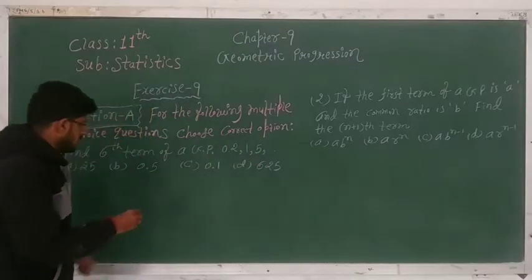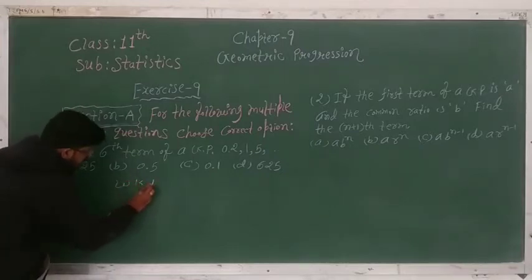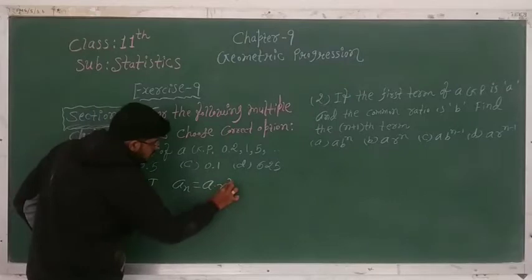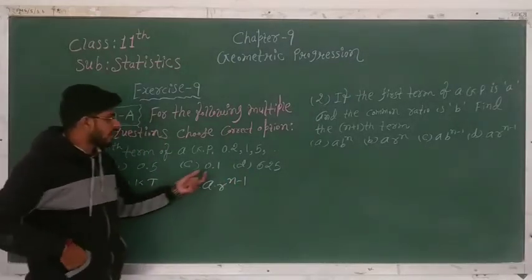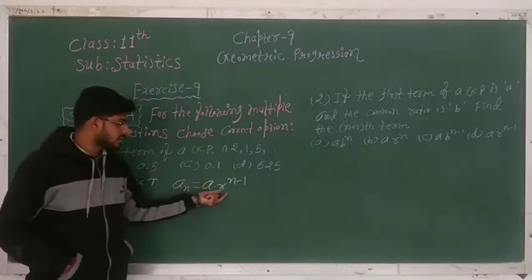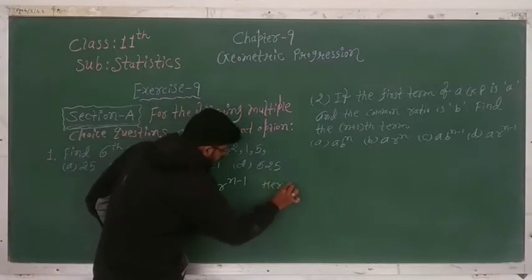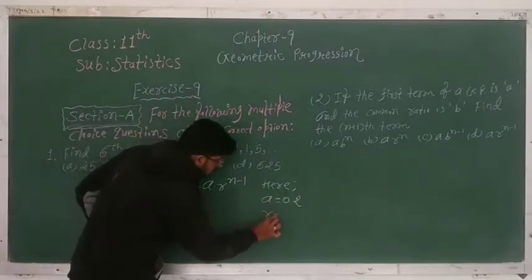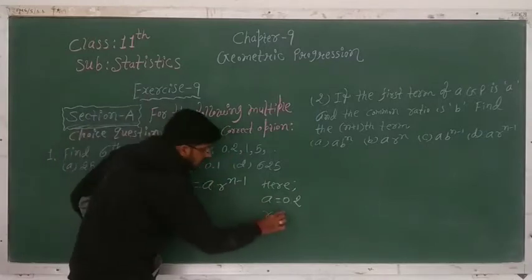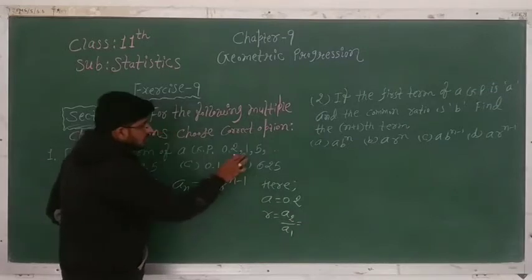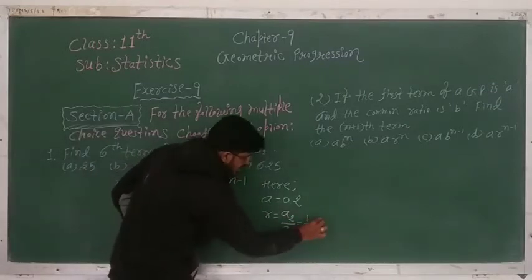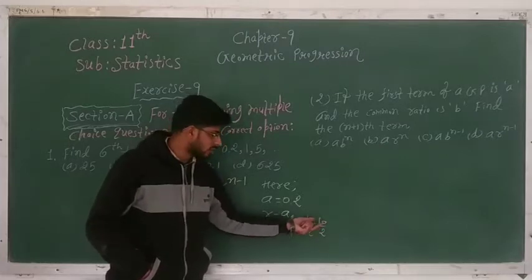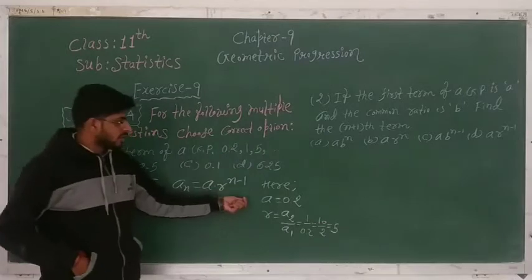We know that the nth term of a GP is given by aₙ = a · rⁿ⁻¹. First, we find the first term and common ratio. Here a = 0.2. The common ratio r = a2 / a1 = 1 / 0.2 = 10 / 2 = 5. So the common ratio is 5.